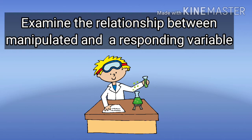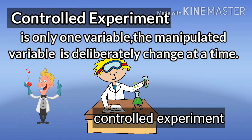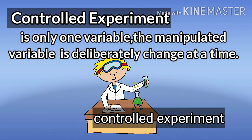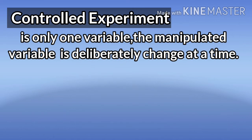To examine the relationship between a manipulated variable and a responding variable, scientists use a controlled experiment. In a controlled experiment, only one variable — the manipulated variable — is deliberately changed at a time, while the responding variable is observed for changes. All other variables are kept constant or controlled.